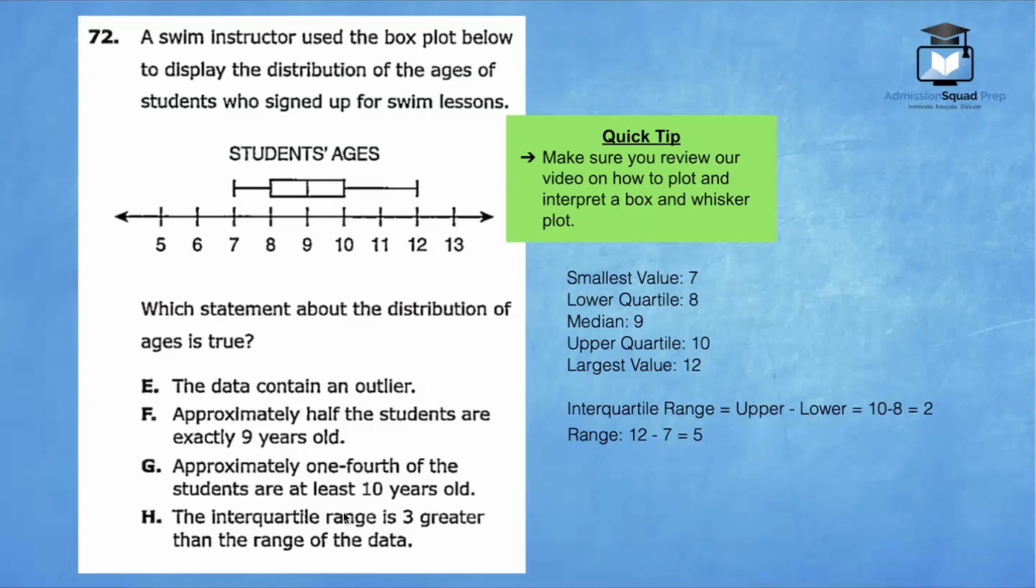Approximately one-fourth of the students are at least 10 years old. To be at least 10 years old means you're greater than or equal to 10. So that would represent this region right here, which is absolutely correct. From 10 to 12 represents 25% of the data set, which is exactly what this question is saying. Approximately one-fourth or 25% of all of the students are at least 10 years old. So that means they're between 10 and 12 years old. So that is the correct answer.